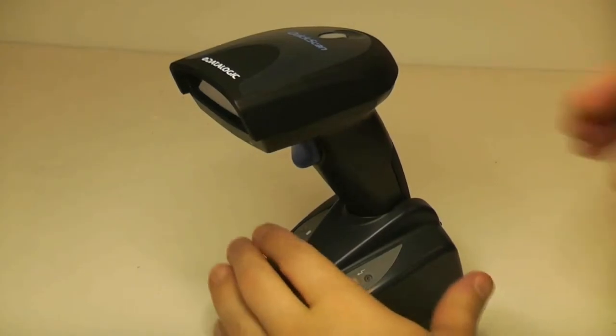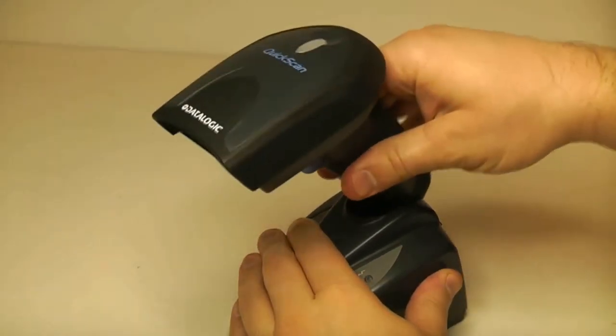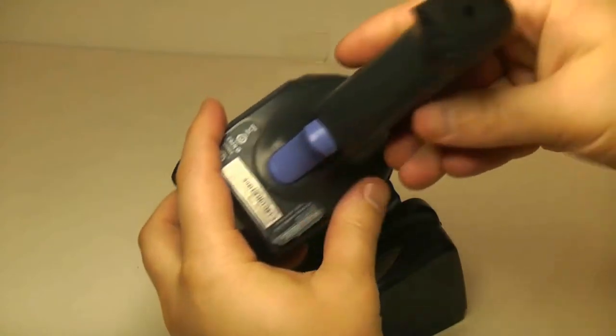To replace the battery on a quick scan mobile, first locate the screw at the bottom of the scanner's handle.